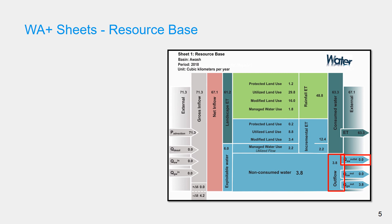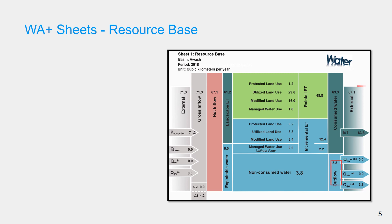The surface outflow is the surface outflow from the basin occurring naturally. There could also be artificial surface outflow in the form of basin transfer, and groundwater outflow occurring at the subsurface. All these outflows and the consumption are going out of the river basin.